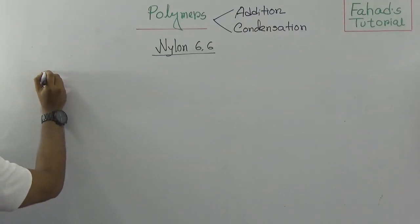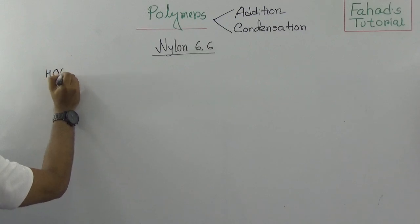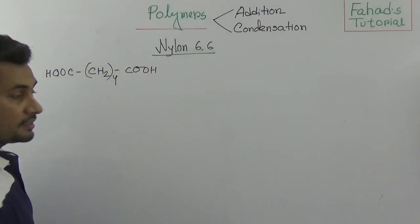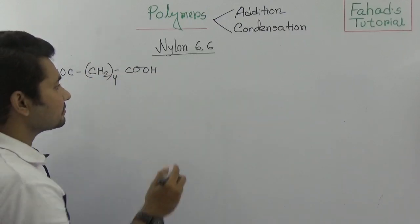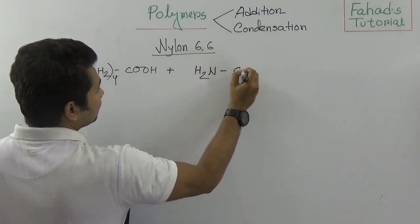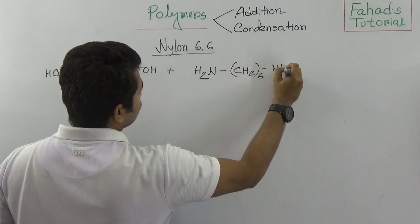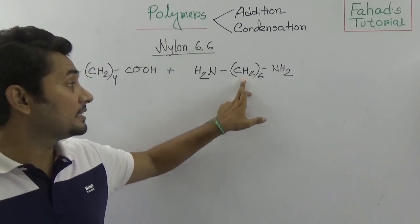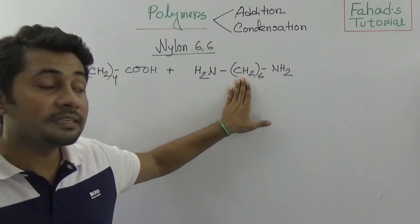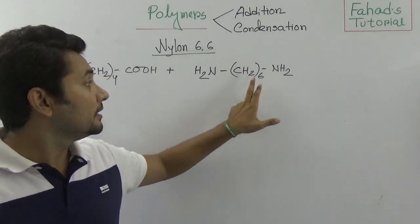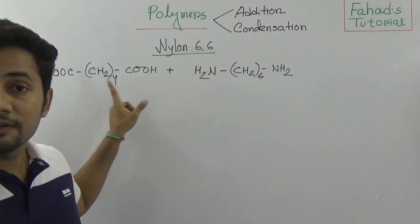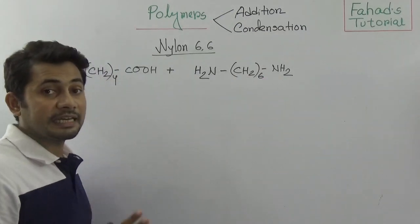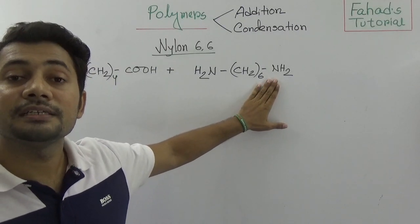Consider adipic acid: HOOC–(CH₂)₄–COOH. Combined with hexamethylenediamine: H₂N–(CH₂)₆–NH₂. Two amine groups are added to six carbons, forming hexamethylenediamine. There are six carbons in the adipic acid chain and six carbons in the diamine — and that is why nylon 6,6 gets its name. The diamine has two amine groups attached to the six-carbon alkyl chain.